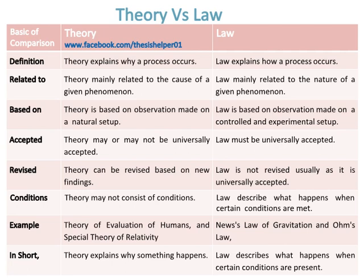Examples of theory include the theory of evolution of humans and the special theory of relativity, whereas examples of laws include the law of gravitation and Ohm's law. In short, theory explains why something happens, whereas law describes what happens when certain conditions are present.